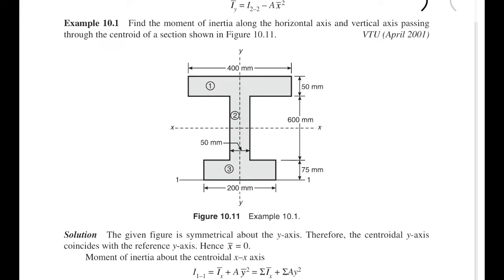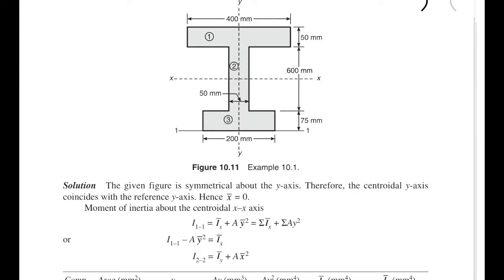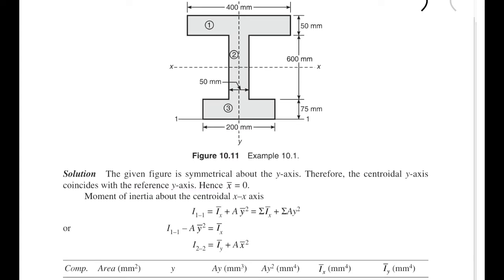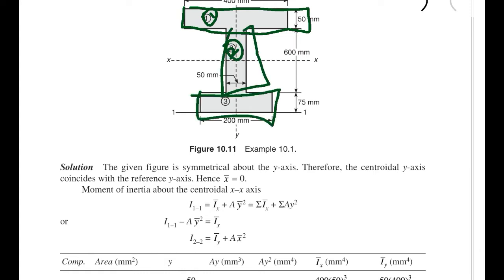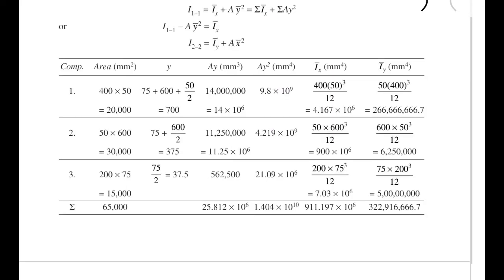We have to find the moment of inertia about the horizontal axis. Since the figure is symmetrical about the y-axis, the centroid axis y coincides with the reference y-axis, hence x-bar equals zero. The moment of inertia about the x-x axis is given by I₁₁ = Ix + Ay², which means summation of Ix plus summation of Ay². There are three components in this section, and we find the individual area, y, Ay, Ay², Ix, and Iy for each, then apply the formula.